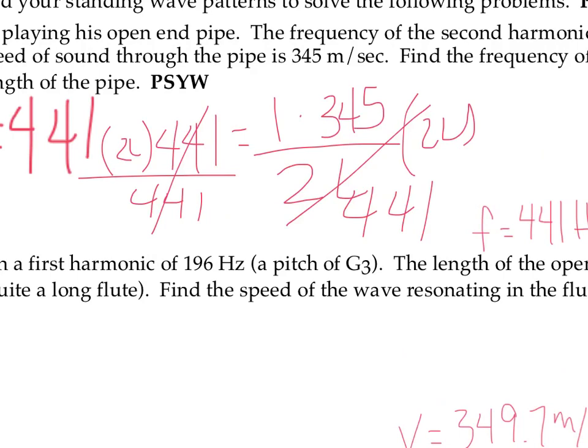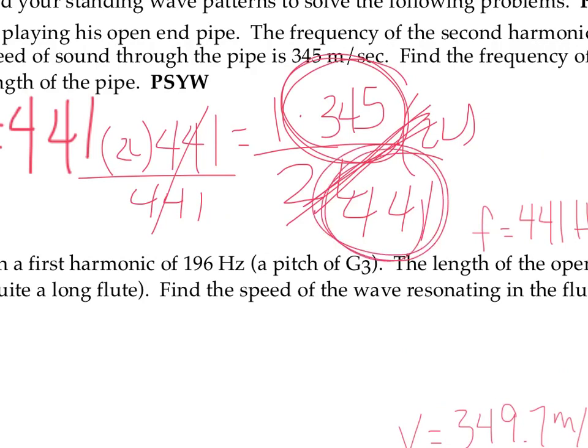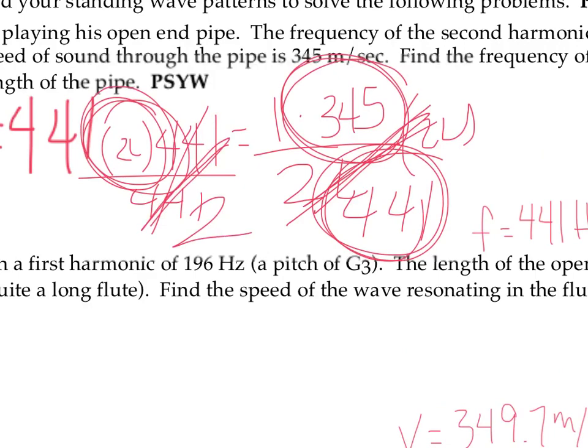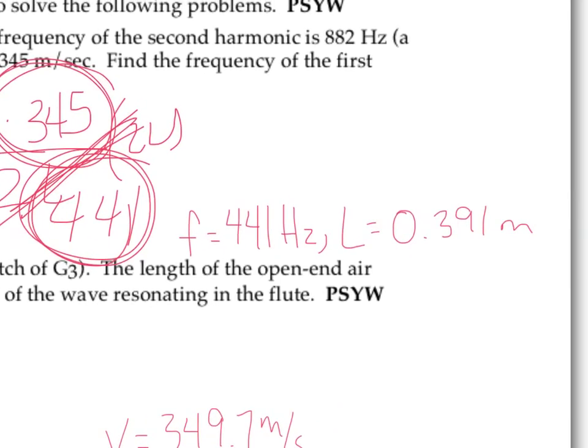Divide both sides by 441. And what you get is what boils down to this. 345 divided by 441 is equal to 2 times the length. So we have to divide again by 2 to get to our length, and that should work you out to the number I have here, 0.391 meters.